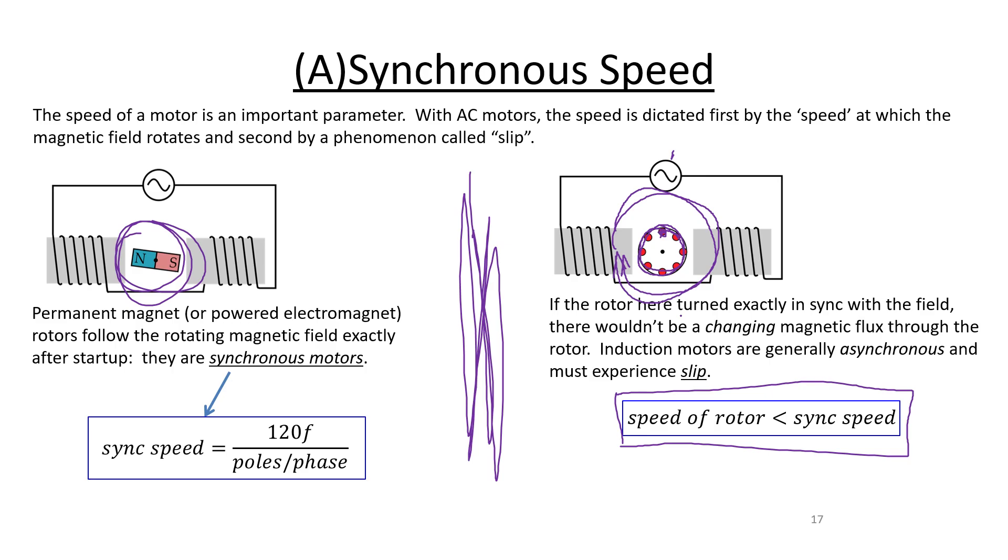So next time we'll talk about, in a little more detail, why that must be the case. We'll take this more complicated squirrel cage rotor here, and we'll reduce it down to just a single loop of conductor, and see how it is that if it matches the synchronous speed, there's no change in the number of field lines going through it. And that should give you an intuition about why it is that we need this difference between the speed of the rotor and the speed of the rotation of the magnetic field in an induction motor. So thank you for your attention, and I will see you on the next one.